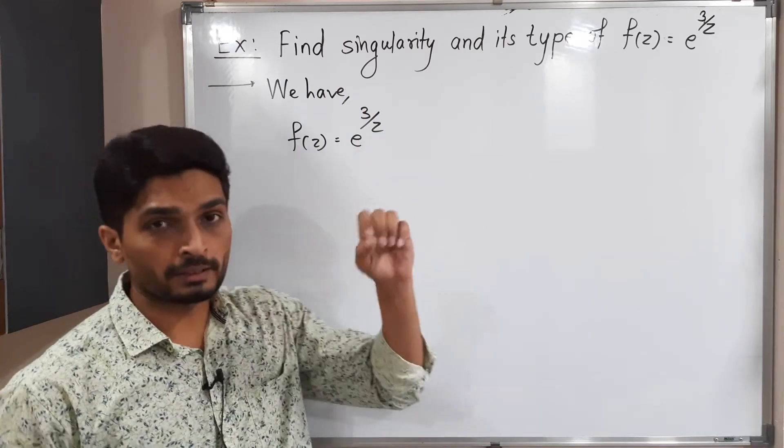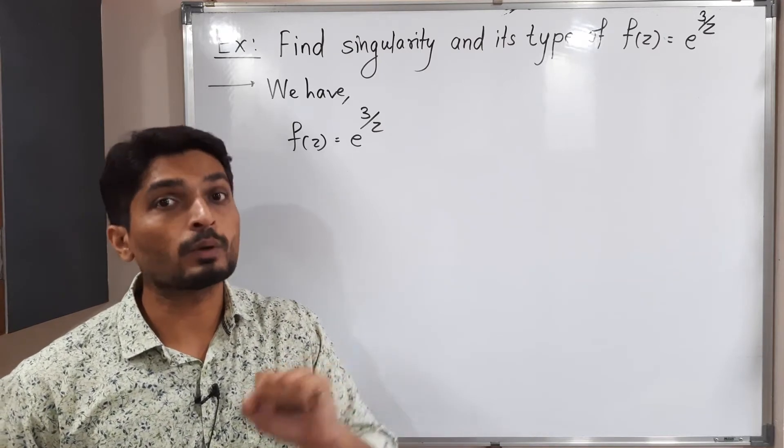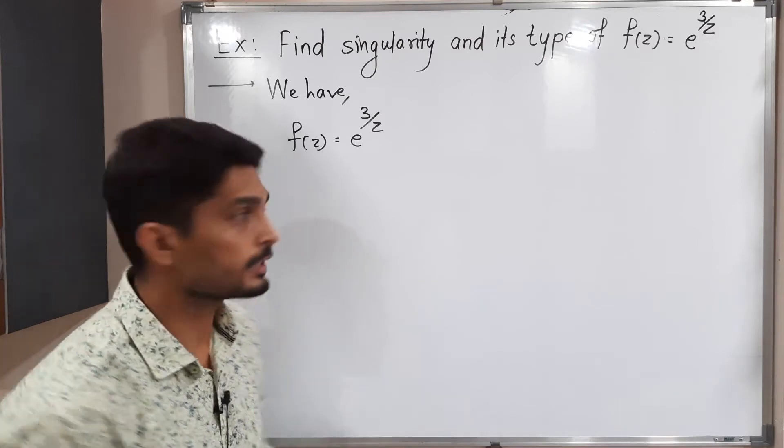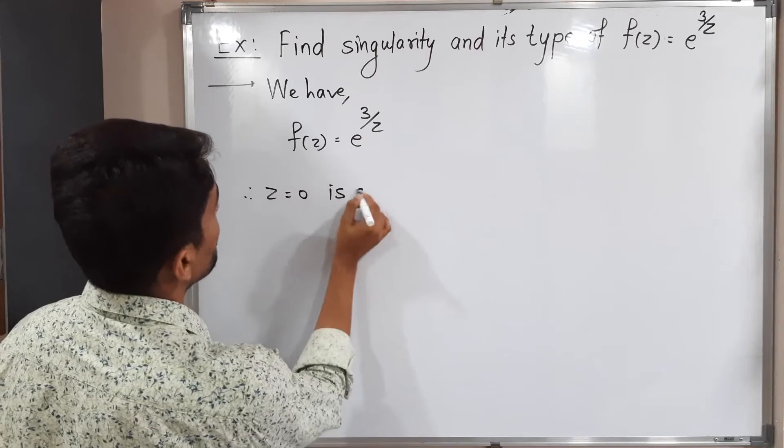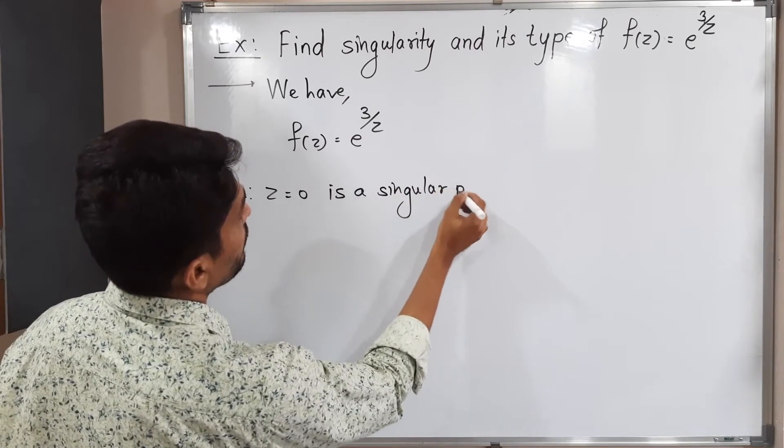If I put z = 0, you will have 1/0 form getting infinity. That's why z = 0 is a singular point. Therefore, z = 0 is a singular point.